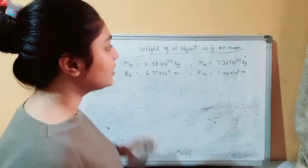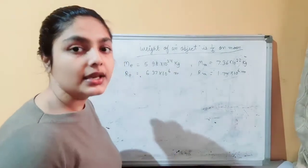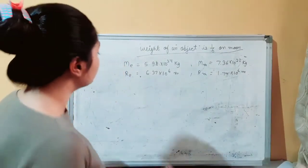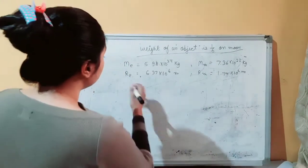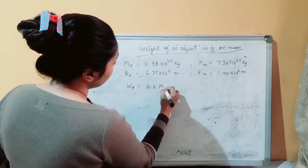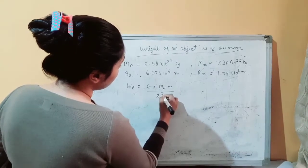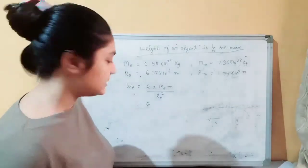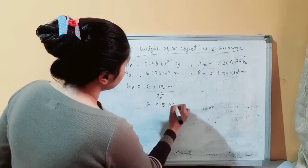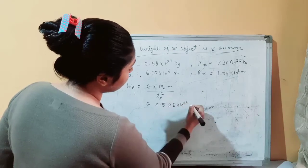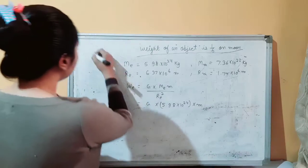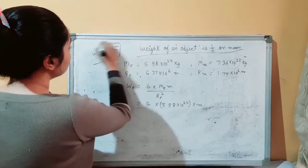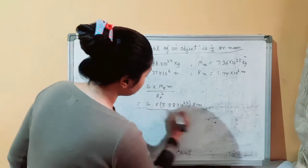Using the formula W = G·M·m / r², we first calculate the weight on Earth. Weight of Earth equals G times 5.98 × 10²⁴ times m, upon r squared. We are not putting the value of G yet to keep the calculation easy. So we write: W_Earth = G × 5.98 × 10²⁴ × m, upon (6.37 × 10⁶)².